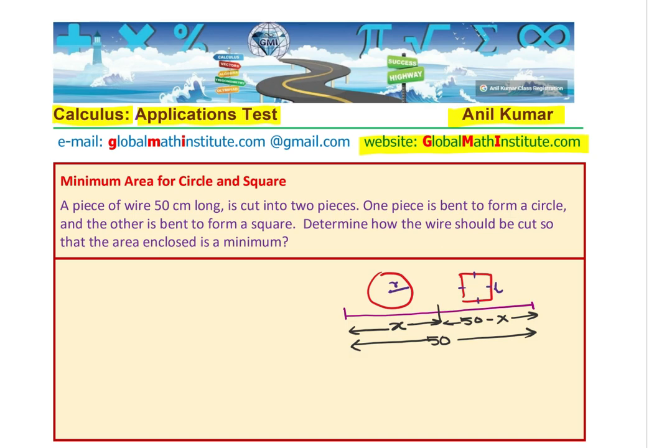Now let us assume that the radius of the circle is r and each side of a square is l. So from here, we can relate r and l in terms of x. Clearly we know that the value of x is between 0 to 50. So that is our boundary.